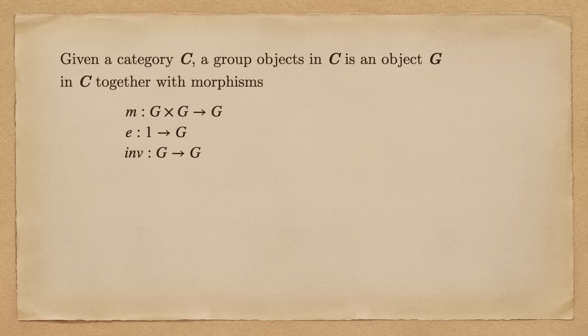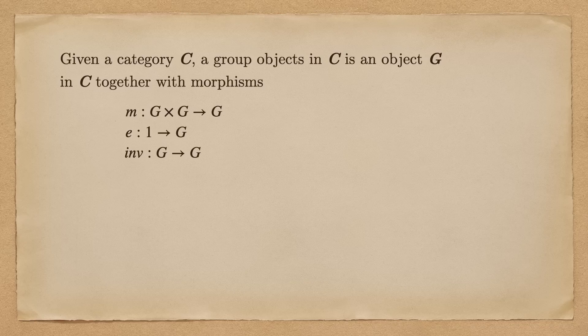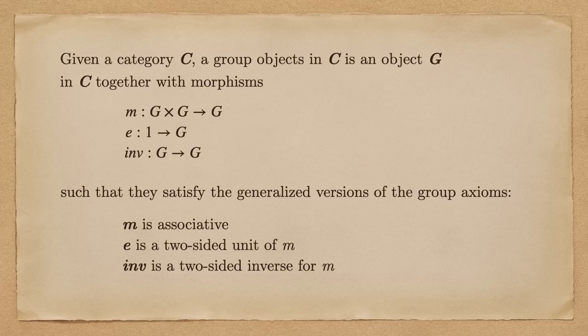Turns out the answer is yes, of course. Given a category C, a group object in C is an object G in C together with morphisms that mimic multiplication, identity, and inverse operations such that they satisfy the generalized versions of the group axioms.